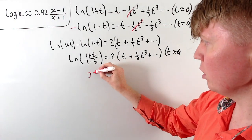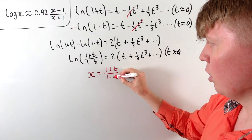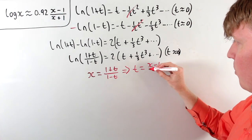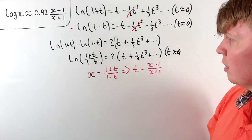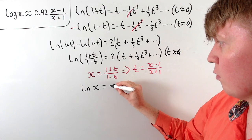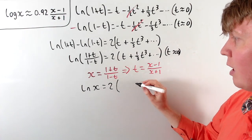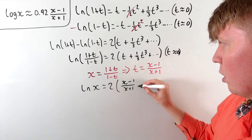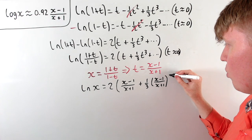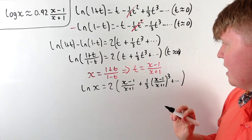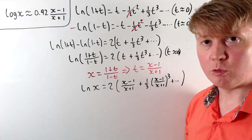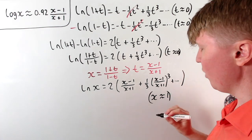We can now set x equal to (1 + t)/(1 minus t). After rearranging to make t the subject, we get t equals (x minus 1)/(x plus 1). So ln((1 + t)/(1 minus t)) becomes ln x, giving us ln x equals 2 times ((x minus 1)/(x plus 1)) plus one-third times ((x minus 1)/(x plus 1)) cubed and so on. This is good for t near 0, and since x equals (1 + t)/(1 minus t), t near 0 means x is near 1.